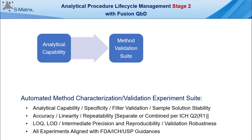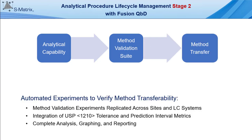Fusion QBD's method validation module contains a complete method performance characterization and validation suite with full LC experiment automation, and with design, analysis, graphing, and reporting aligned with the FDA, ICH, and USP guidances. The LC experiment automation capabilities within Fusion QBD and the integration of the USP 1210 tolerance and prediction interval metrics make Fusion QBD's method validation module an excellent tool to support method transfer across sites and LC systems.